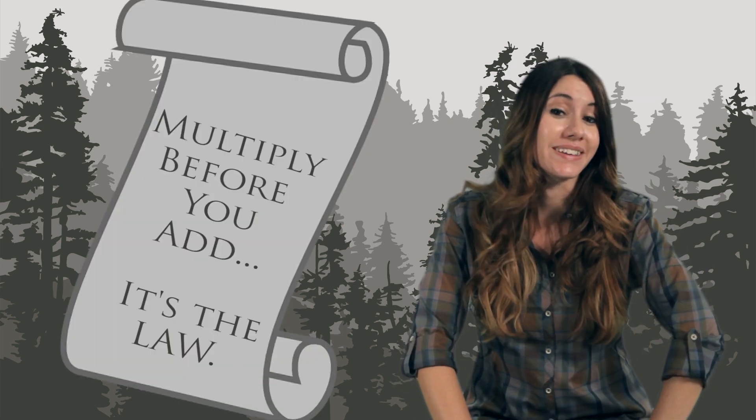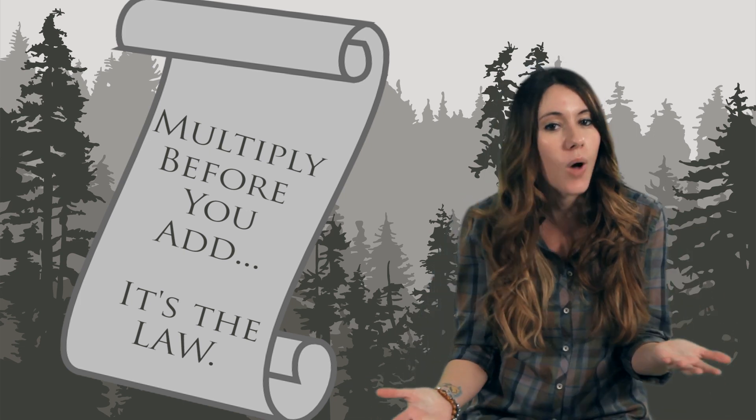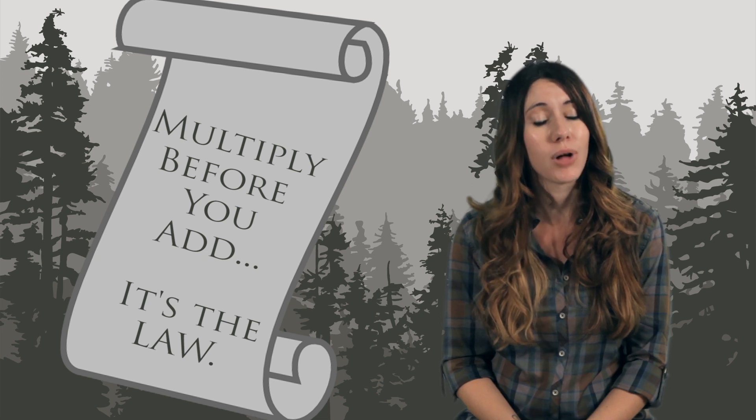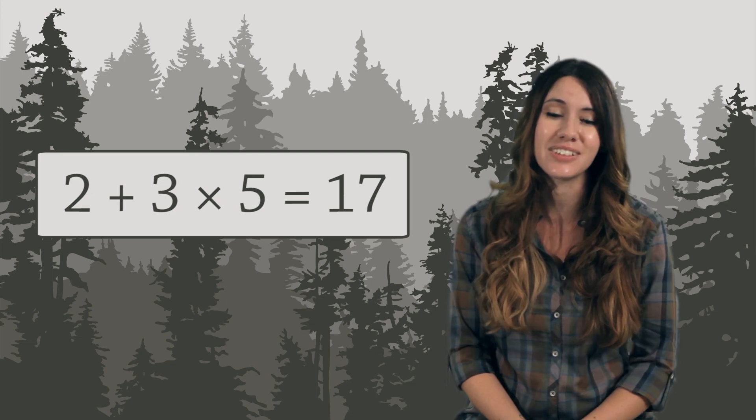Which one is right? What do we do first? Well, math law decrees that you multiply before you add. There isn't any deep reason why. It's just a rule that people created to avoid confusion. Multiply before you add. So 2 plus 3 times 5 equals 17.